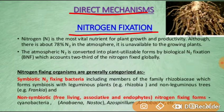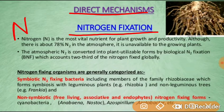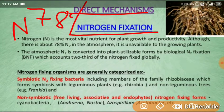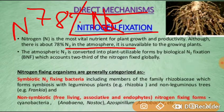In the direct mechanism, the first is nitrogen fixation. Nitrogen is the most vital nutrient for plant growth and productivity. Although there is 78% nitrogen in the atmosphere, it is unavailable to growing plants. Atmospheric nitrogen is converted into plant-utilizable forms by biological nitrogen fixation, which accounts for two-thirds of the nitrogen fixed globally.